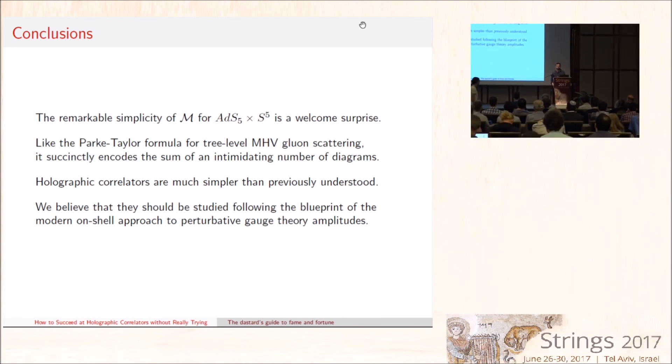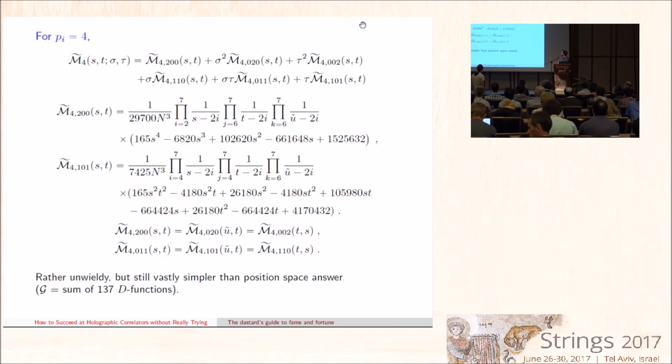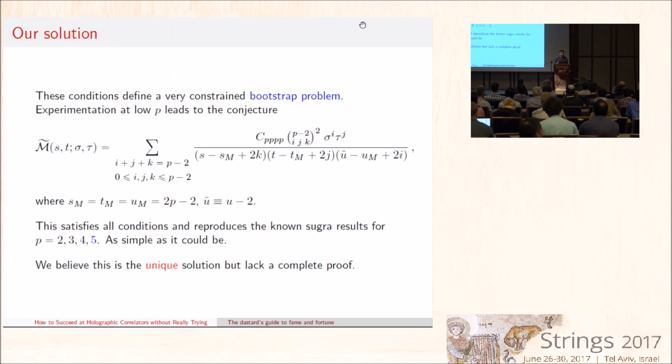Do you have any intuition for why the AdS7×S4 results are more complicated than AdS5×S5? No, I don't. But, again, the expression that I showed earlier is a little unwieldy, but I'm waiting to have an insight for how to write it in a slightly better way. I hope we'll be able to do it. I think the real advance here is that we have a set of algebraic conditions that fix the answer uniquely. That's the hope. In fact, it's so miraculous that this condition can be solved at all. And then, yes, it's a matter of cleverness, I think.